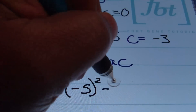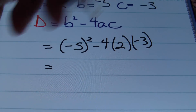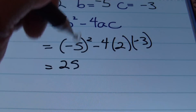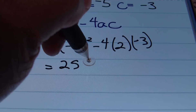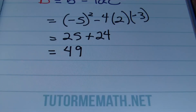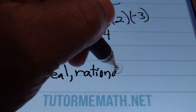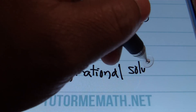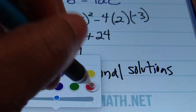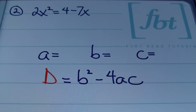Plugging into the discriminant formula b squared minus 4ac: negative 5 squared minus 4 times 2 times negative 3. Simplifying: 25 plus 24 gives us 49. Since 49 is a positive perfect square (7 times 7), we end up with two real rational solutions, meaning two x-intercepts.